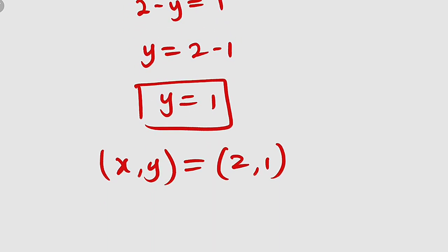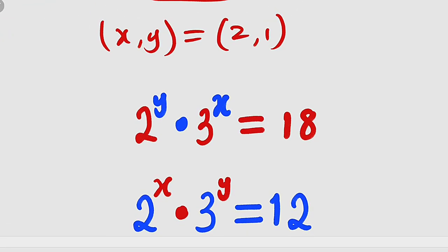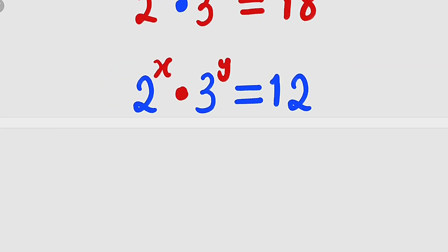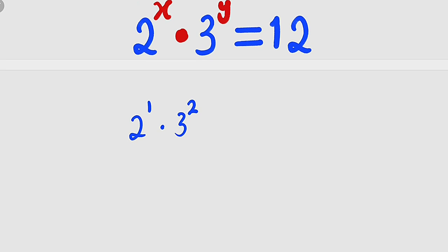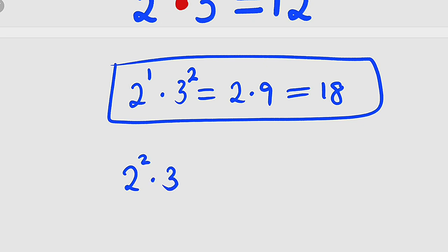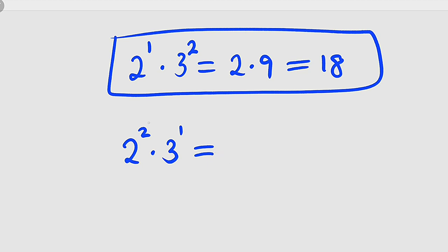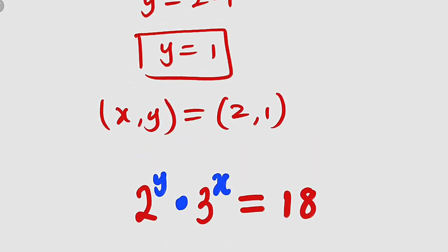We can test this in the main equations to verify. If x equals 2 and y equals 1, plugging into the first equation: 2 to the power of 1 multiplied by 3 to the power of 2. That is 2 times 9, which is indeed 18. For the second equation: 2 to the power of 2 multiplied by 3 to the power of 1 — that is 4 times 3, which is indeed 12. Hence, the values of x and y are 2 and 1, respectively.